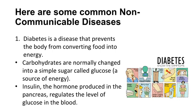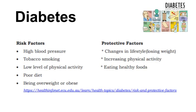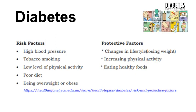Signs and symptoms of diabetes include increased thirst, frequent urination, extreme hunger, unexplained weight loss, fatigue, irritability, blurred vision, and slow healing sores. Possible complications include cardiovascular disease, nerve damage, kidney damage, eye damage, foot damage, skin conditions, and hearing impairment. Risk factors include high blood pressure, tobacco smoking, low level of physical activity, and poor diet or being overweight. Protective factors include changes in lifestyle, losing weight, increasing physical activity, and eating healthy foods.